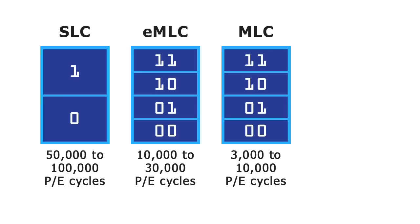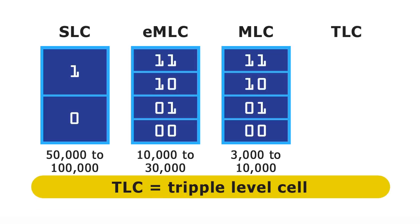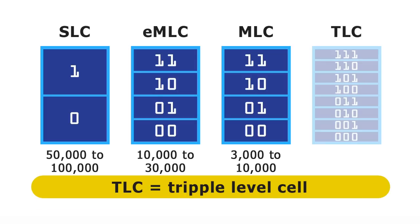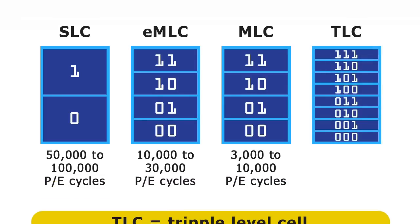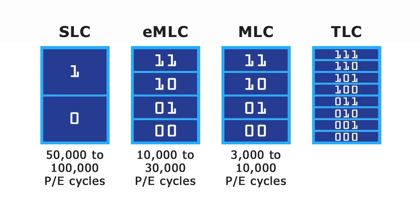After MLC, we got TLC or triple-level cell, which stores three bits of data per cell. While this further lowers SSD price per bit, it again does so at the cost of cell endurance, with TLC SSDs having typical PE ratings of somewhere between 500 and 2,000 cycles.